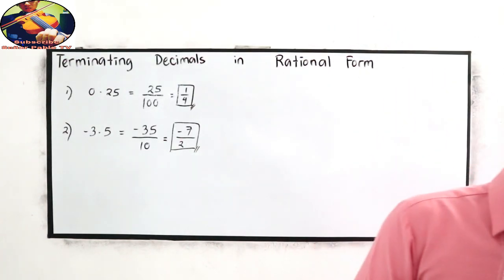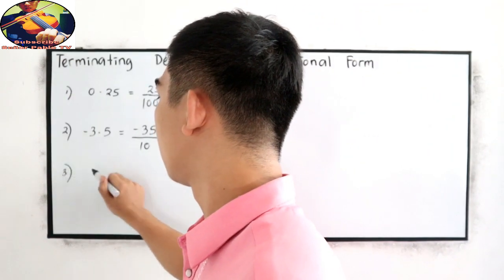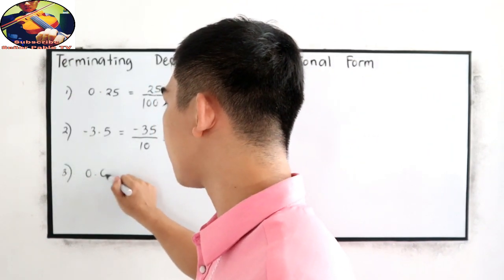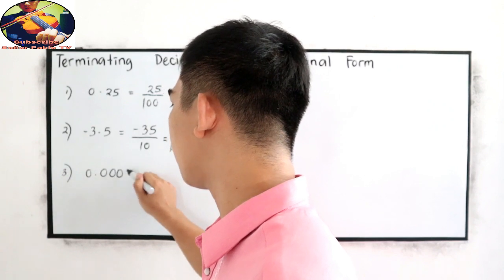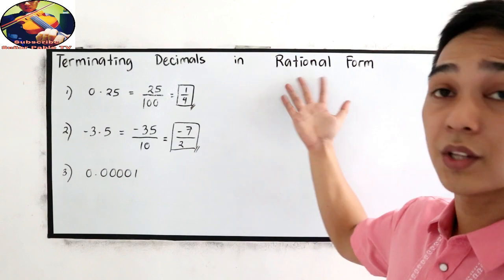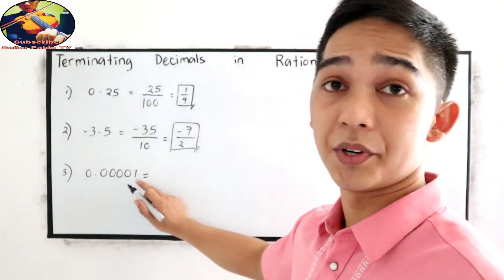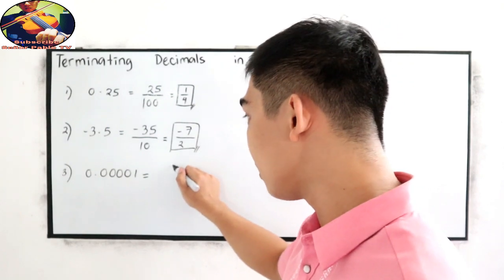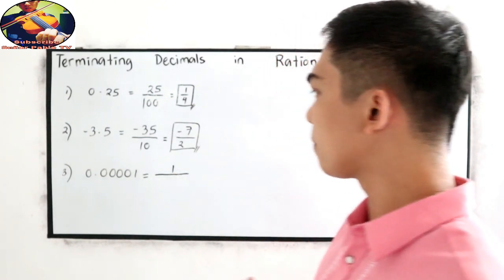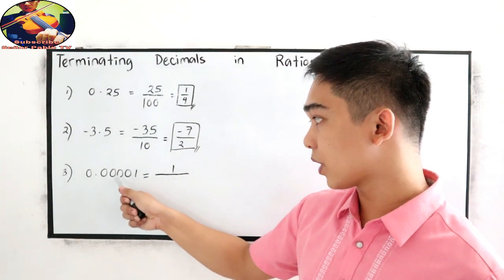Next, number 3. 0.00001. Write into rational form. So we have a number, which is 1, over how many decimal places? 1, 2, 3, 4, 5.